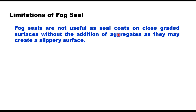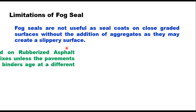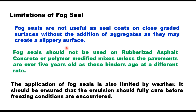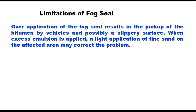Fog seals should not be used on rubberized asphalt concrete or polymer modified mixes unless the pavements are over five years old, as these binders age at a different rate. The application of fog seal is also limited by weather — it should be ensured that the emulsion fully cures before freezing conditions are encountered. Over-application of fog seal results in pickup of bitumen by vehicles and a slippery surface; when excess emulsion is applied, a light application of fine sand on the affected area may correct the problem.